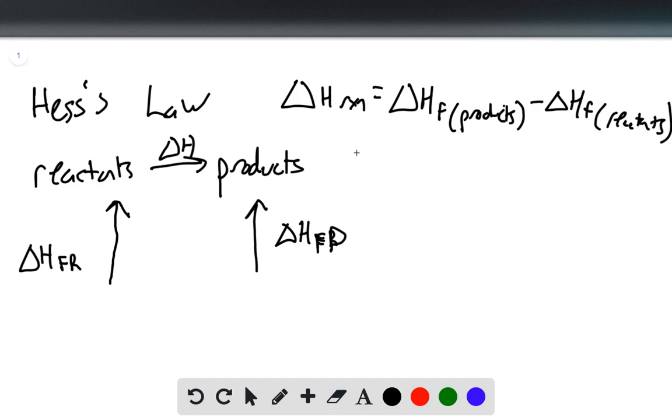The reason that this is useful is because if it's impossible or impractical to calculate the delta H of reaction by itself, we can use this Hess's law approach to theoretically find the delta H of reaction for any potential reaction at all.